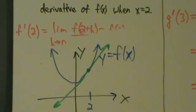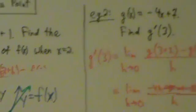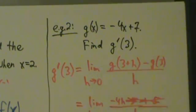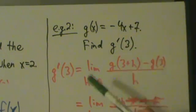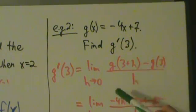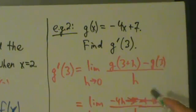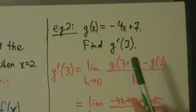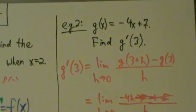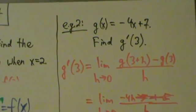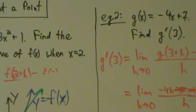One last thing: in Example 2, you can also interpret the result in terms of tangent lines. But when you talk about tangent lines to a straight line, it's a bit strange — you just end up with the same line anyway. We'll do one more example in the next video before moving on to different kinds of functions.